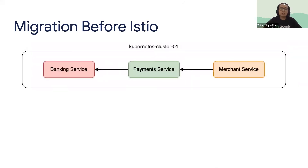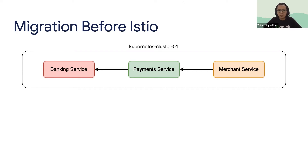We have Kubernetes cluster 0.1 with three services communicating with each other, creating dependencies. For example, merchant service calls payment service, and payment service calls banking service. When we migrate the payment service, the simplest way is to set up a gateway for both payment service and banking service.